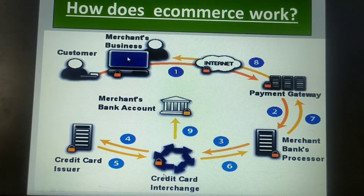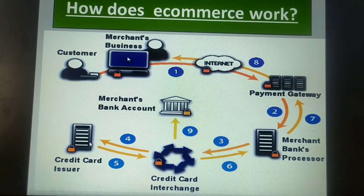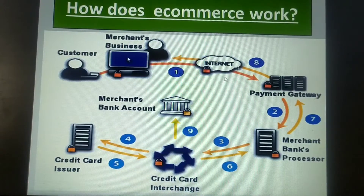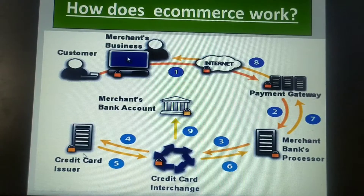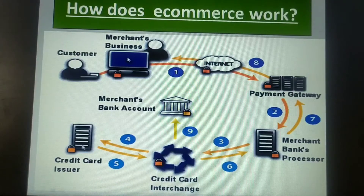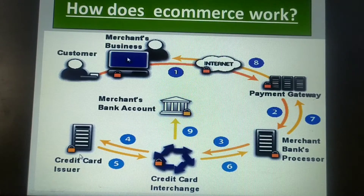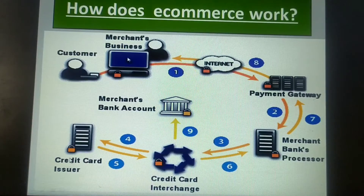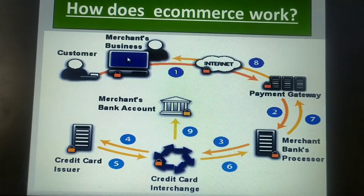In the fourth step, the credit card network will route that transaction to the customer's credit card issuing bank in order to validate whether you are the genuine user or not. In step five, the customer's credit card issuing bank — maybe the customer has an Axis Bank credit card and an SBI account — this customer credit card issuer bank will approve or decline the transaction based upon the customer's available fund. Depending upon the credit limit, the bank may approve or decline the transaction and then pass the results.